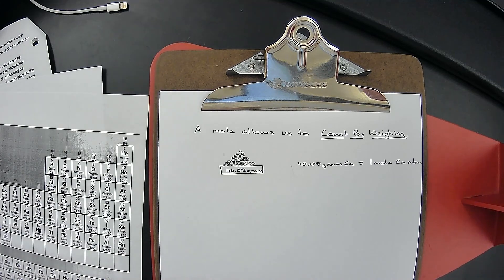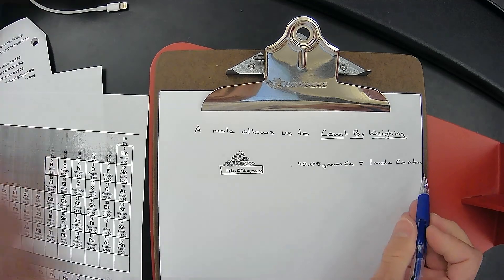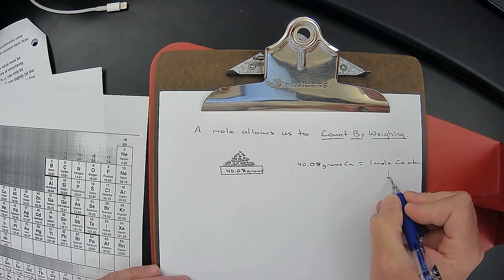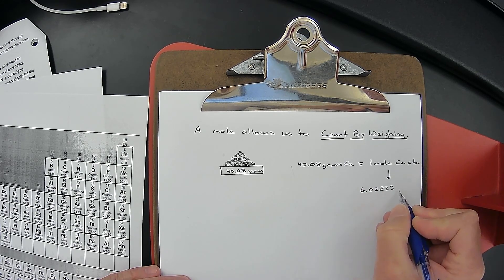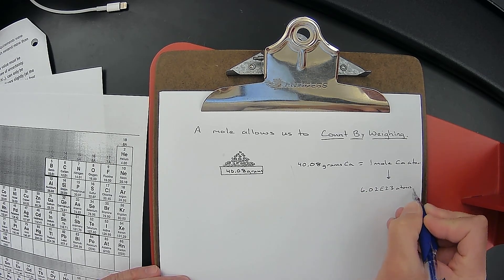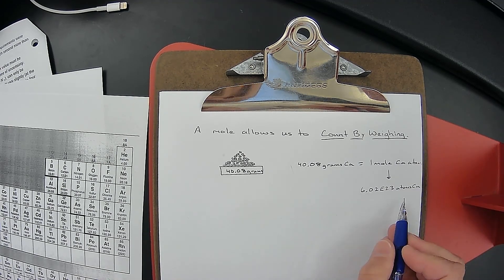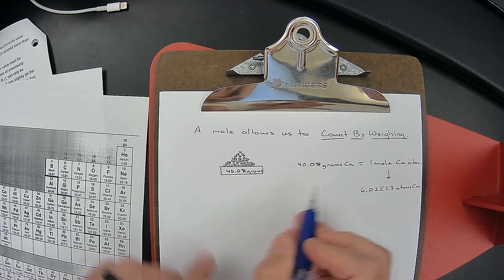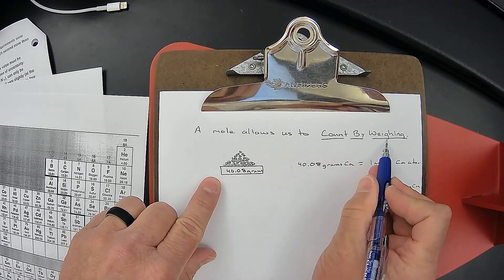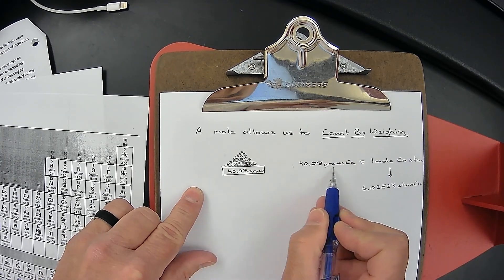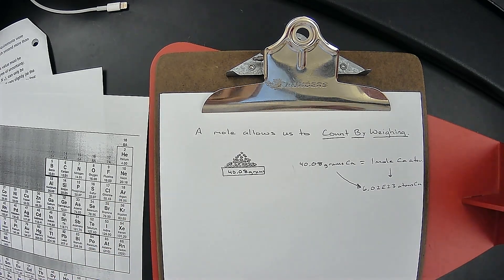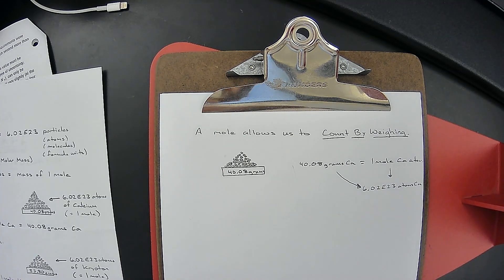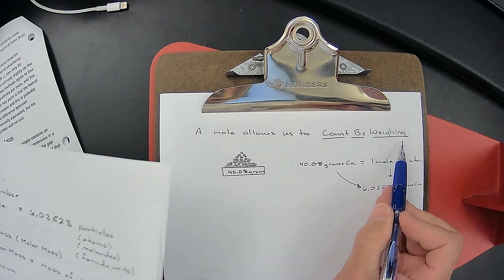Once we know the balance reads 40.08 grams, we know from the periodic table that 40.08 grams of calcium is equivalent to one mole of calcium atoms. We also know that a mole equals 6.02 × 10²³ atoms of calcium. So by weighing 40.08 grams, we now know exactly how many atoms of calcium we have — that's counting by weighing.